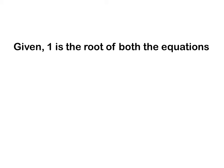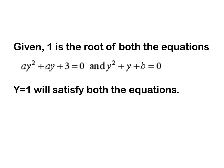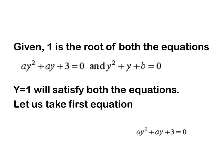From the given question, we know that 1 is the root of both equations: ay² + ay + 3 = 0 and y² + y + b = 0. So we will substitute y = 1, which will satisfy both equations. Let us take the first equation: ay² + ay + 3 = 0.